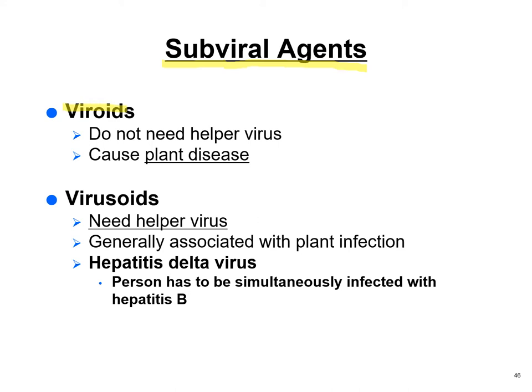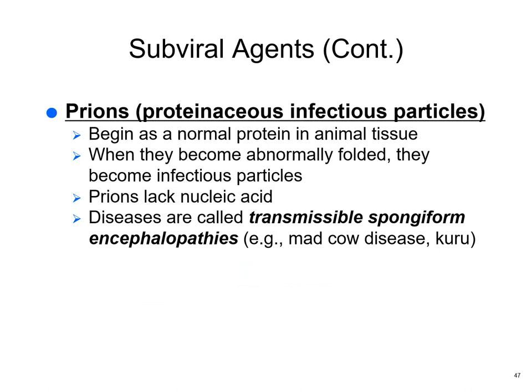Sub-viral agents: viroids cause plant diseases and work alone without a helper virus. Virusoids need a helper virus and generally cause plant infections, but an example in humans is hepatitis delta virus — hepatitis D — where the person must already have hepatitis B to get hepatitis D. This is another reason to get the hepatitis B vaccine.